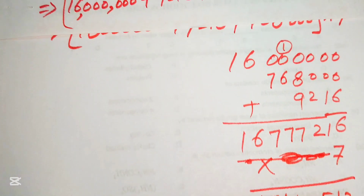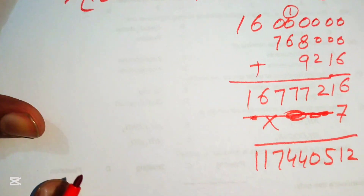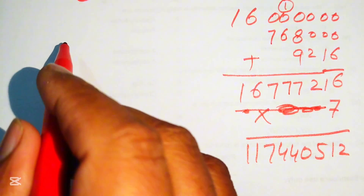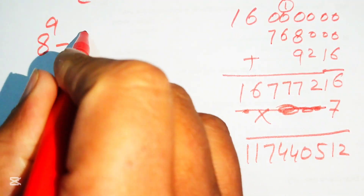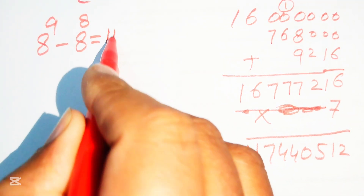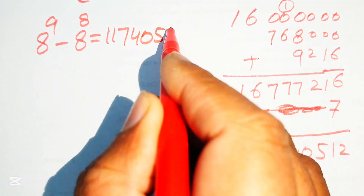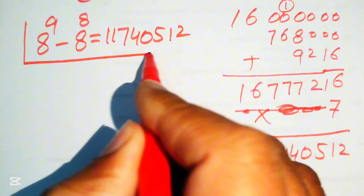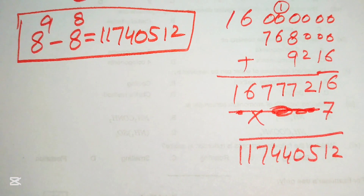So the final answer of the given algebraic expression — 8 to the power of 9 minus 8 to the power of 8 — equals 117,440,512. Thank you so much for watching this video. Please subscribe to my channel for more exciting videos.